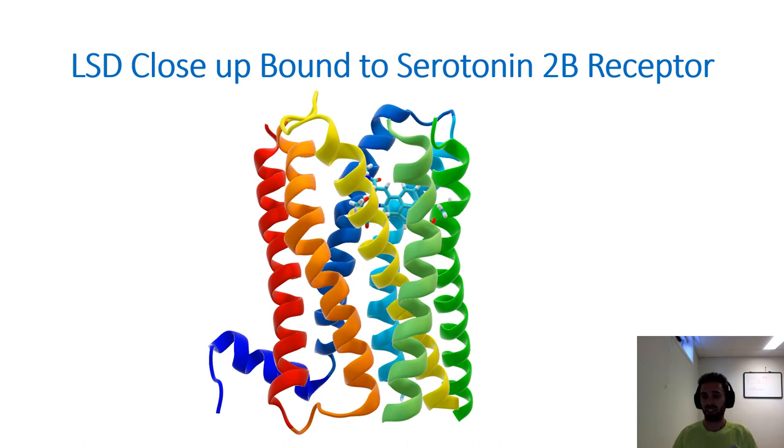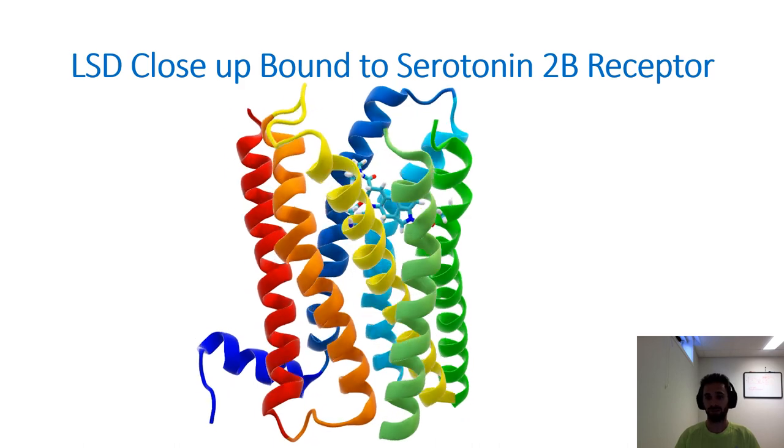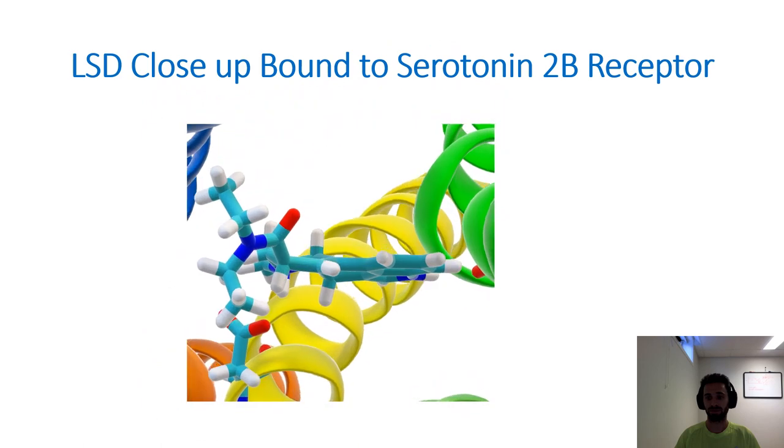This is a slightly different representation of the LSD molecule inside of serotonin 2B receptor. In this view, we can see every atom of the LSD molecule that we couldn't see before. Let's now see what it looks like inside the receptor from the top down. Here's where the drug sits inside the receptor. We'll talk about the implications of this in the next slide.